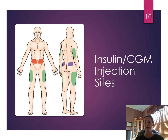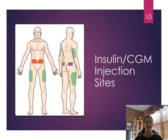It's important to rotate injection sites. For example, if doing MDI in your facility, you would start with the left abdomen, then right abdomen, then left buttocks, right buttocks, then left and right triceps, and then left and right thighs.